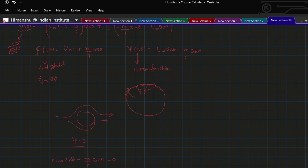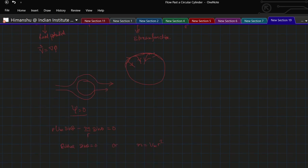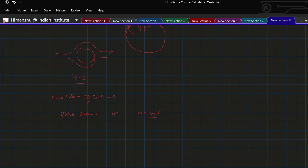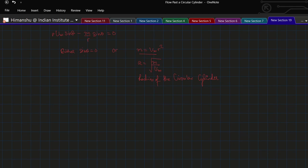You would get either sin theta equals to 0, or m equals to u infinity r square. The r from this result gives the value of the radius of the cylinder, that is square root of m over u infinity. This is the radius of the circular cylinder. From here you would get theta equals to 0 and pi.